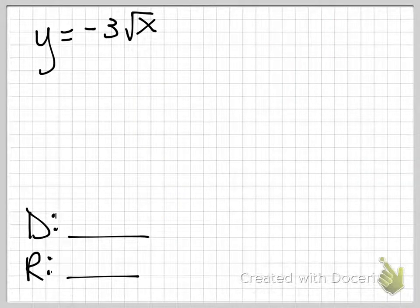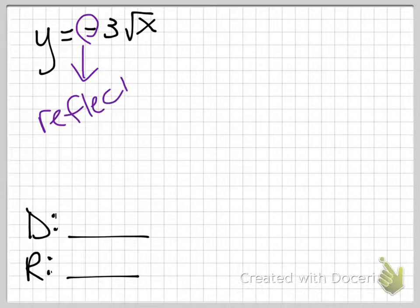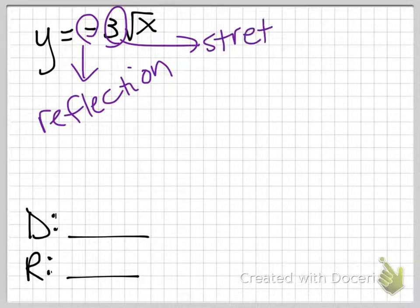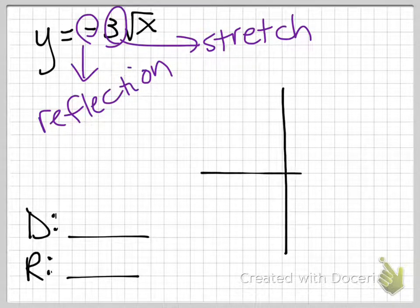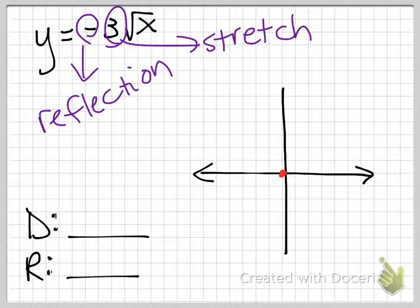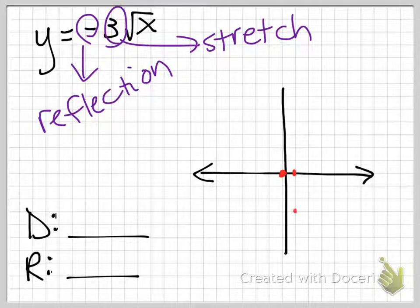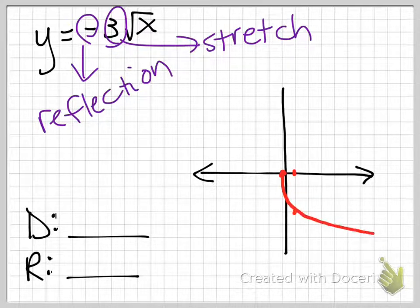If we have a negative, that's going to cause a reflection. And this number, since it's greater than one, is going to be a stretch — a stretch in the reflected direction. So when I draw my graph, I'm going to start at (0, 0) and then go down. The first point where 1 is will be at negative 3. So basically it goes down 3 over 1, and it stretches in this direction because it's reflected.